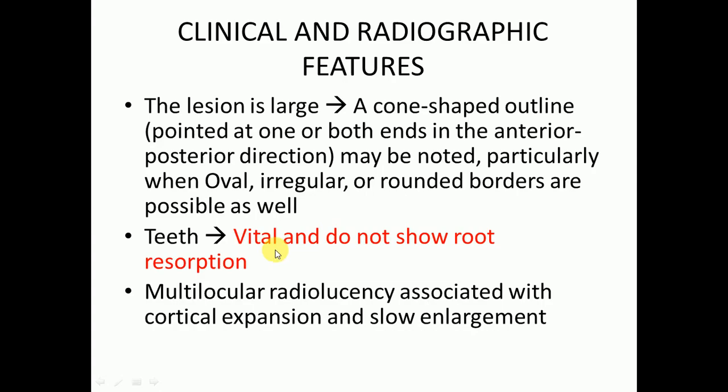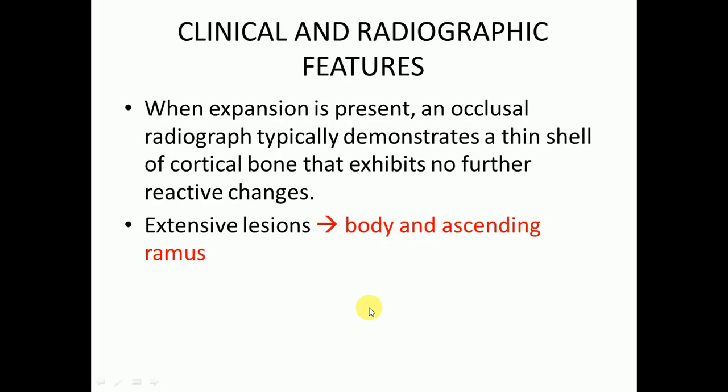The multilocular form is associated with cortical expansion and slow enlargement. When expansion is present, an occlusal radiograph typically demonstrates a thin shell of cortical bone that exhibits no further reactive changes. Extensive lesions most commonly involve the body and ascending ramus area of the mandible.